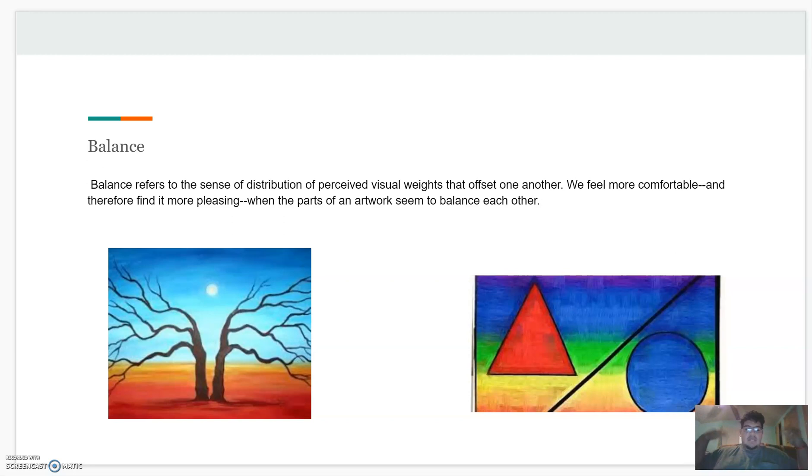You gotta balance it by weight. Like if you had a circle on this side and a triangle on this side, it's kind of balanced. But if you had a small circle on here and a big circle here, then it's gonna fall this way. So that's basically balance for you.